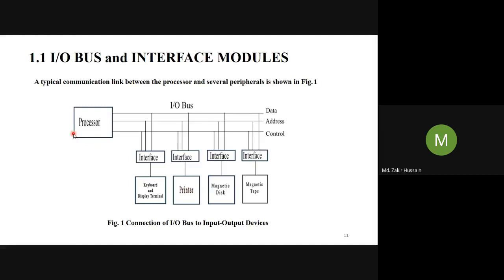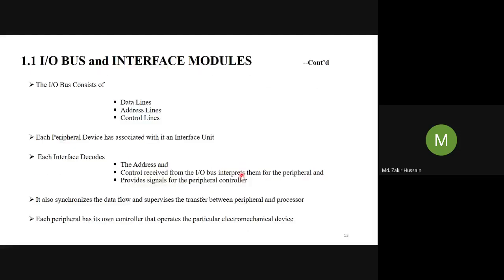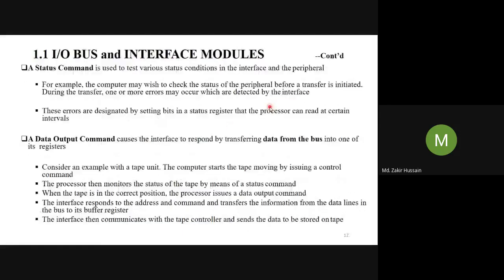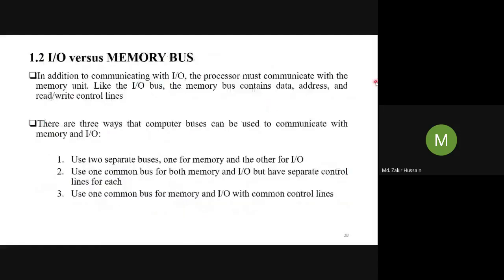The control signals required from the memory are read and write — we may read from the memory or we may write to the memory. So read/write control signals are required. That is the reason why, apart from having data and address, we have read/write control lines.